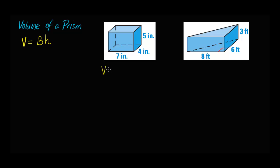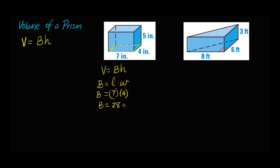For this example, if I'm going to look for the volume, first I have to look for the area of the base. Since the base for this prism is a rectangle — this is a rectangular prism — the base is right here, and I have the measures for the rectangle: it's seven by four. So to find the area of a rectangle, we know that it is length times width. So the area is seven times four, which is 28 square inches. That's the area of the base, which is how much space the bottom of this box occupies.